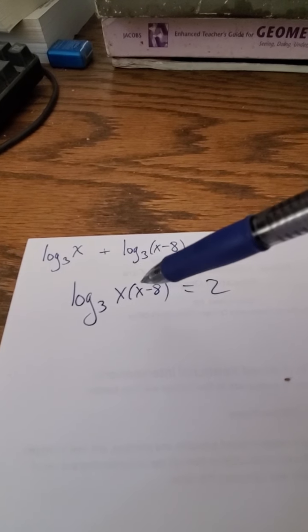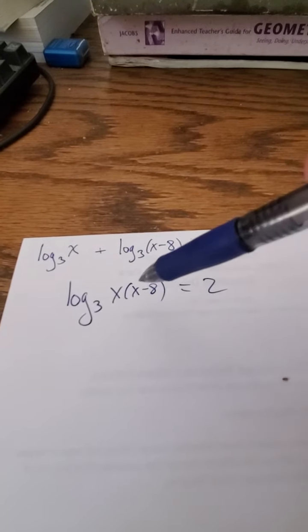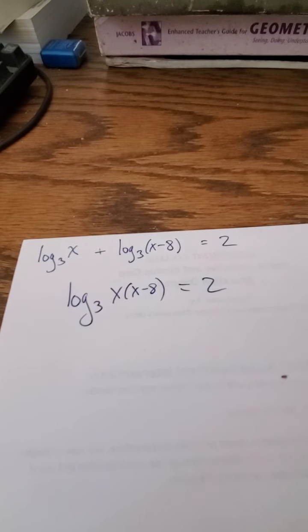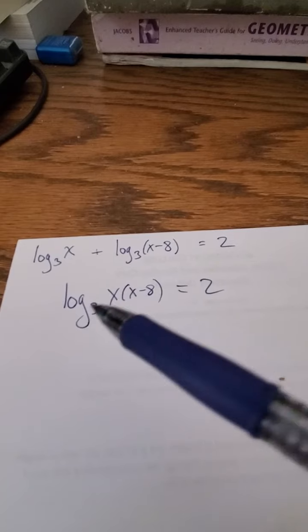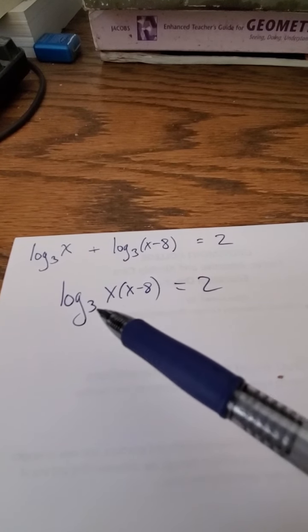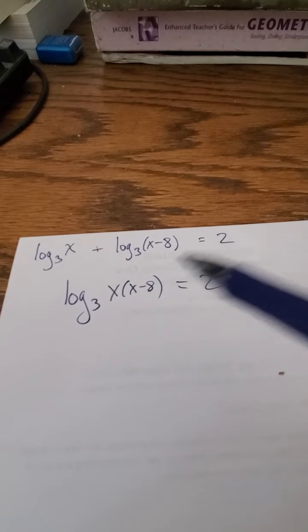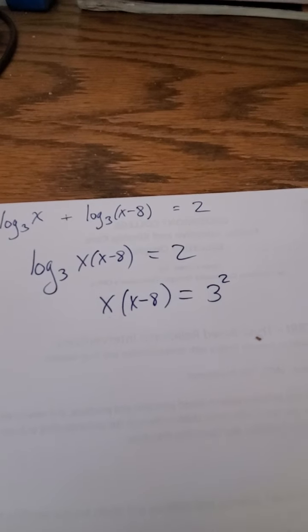But I don't have any other log. See, before we had log, log, and we just set the two inside parts equal, but there's no other inside part. So I'm going to use here a property of logarithm. By definition, this means that 3 to the second power equals this right here. So I'm going to rewrite that: x times x minus 8 equals 3 to the second power, because that's the base 3 and that's the exponent.